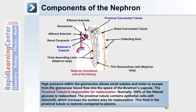The high pressure within the glomerulus allows small solutes and water to escape from the glomerular blood flow into the space of Bowman's capsule. The proximal tubule is responsible for reabsorption. Normally, 100% of the filtered glucose is reabsorbed. The proximal tubule contains epithelial cells with microvilli, which increase the surface area for reabsorption. The fluid in the proximal tubule is isotonic compared to plasma.